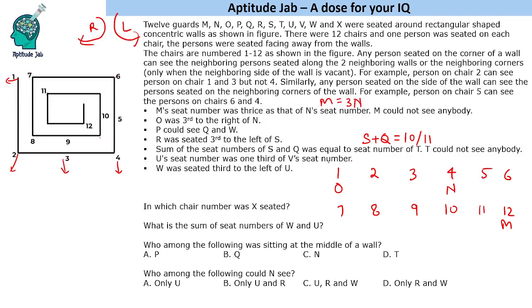U seat number was one third of V seat number. We will have to check for multiples of 3. If we put V is equal to 3, then U will be 1. But 1 is already occupied by O. Either it could be 2, 6 or 3, 9. U and this is accordingly V, one third of V. These are two cases that we will make. W was seated third to the left of U. If we take U is equal to 2, then left side is 1, 2, 3, basically add 3. If it is saying left, add that number. Right, subtract that number. W will be 5 in this case and 6 in this case.